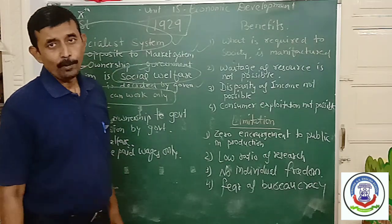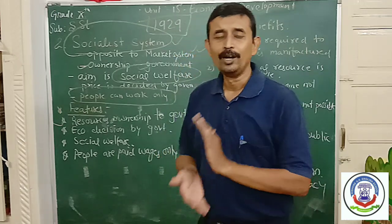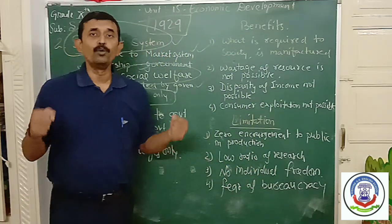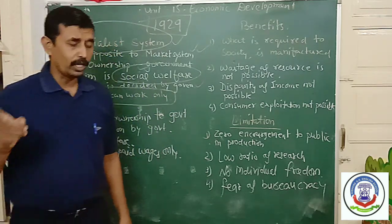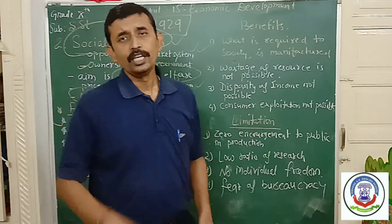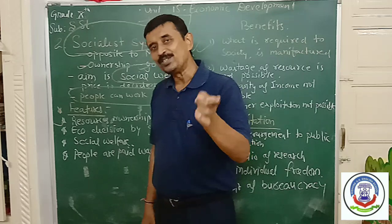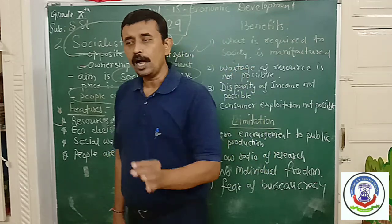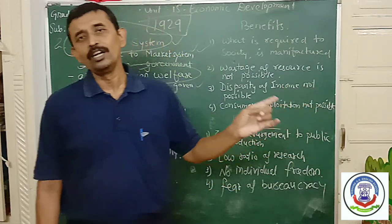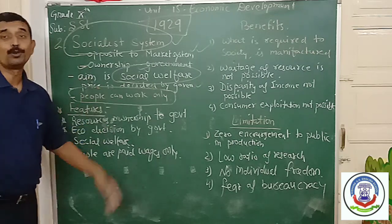People can work as labor; they will get wages from the government, but they cannot be the owners. For example, in India people have their own land — they are the owners, and they are free to cultivate whatever crop they wish. But in the socialistic system, everything is decided by the government. If the government asks farmers to grow wheat, they have to produce wheat only — no other food grain can be produced. These are the features of socialistic economy.